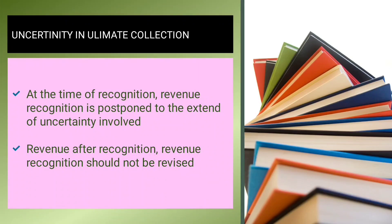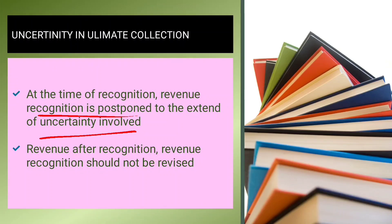The next topic is uncertainty in ultimate collection. Once revenue recognition has been done, it should not be revised. If there is a need to account for uncertainty after recognition, a separate provision should be kept rather than revising the revenue already recognized.